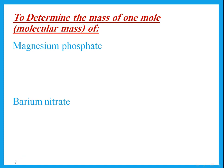Let's calculate the molecular mass of magnesium phosphate. First, write the formula. Magnesium is Mg; phosphate is PO₄. Magnesium is in group 2 so its valency is 2, and phosphate has valency 3. Using the criss-cross method, the formula is Mg₃(PO₄)₂. To find the molecular mass, add up all the atomic masses from the periodic table — the big numbers.